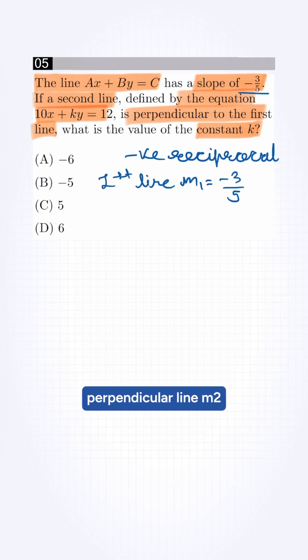Now for the slope of the perpendicular line m2, it will be the reciprocal, which is minus 1 by m1, which is minus 1 by minus 3 by 5, which will be 5 by 3.